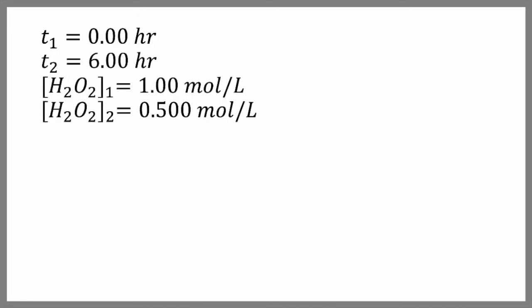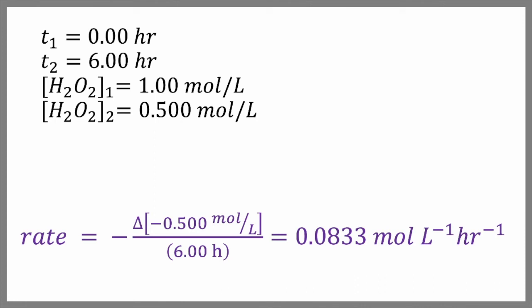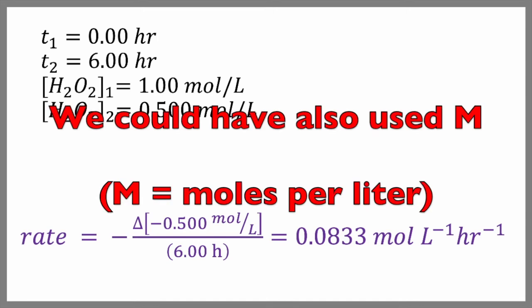When we substitute our numbers in, we get an answer of 0.0833 moles per liter per hour, or moles times liters to the negative one times hours to the negative one. And we use the unit hours because that's what we were given. Now, rather than using moles per liter in our calculations, we could have also used molar, which is the same thing.